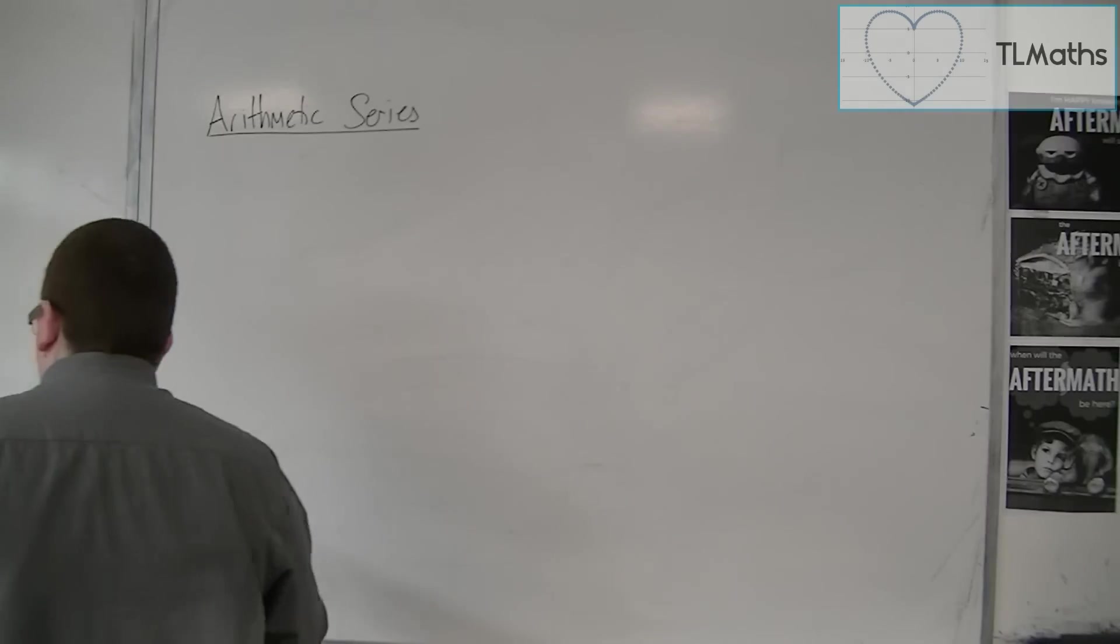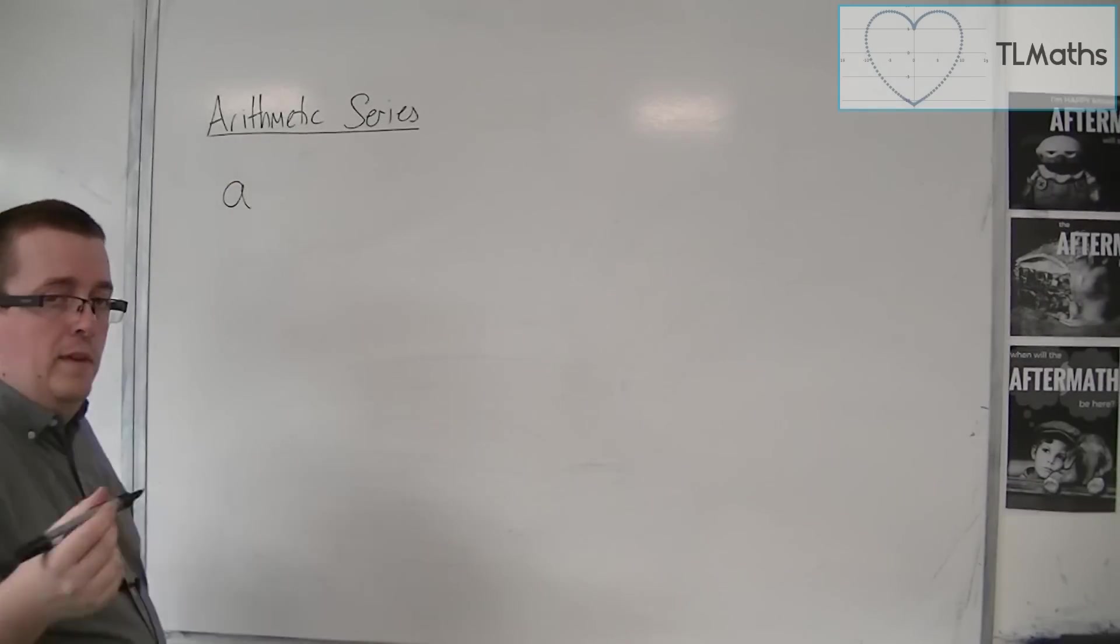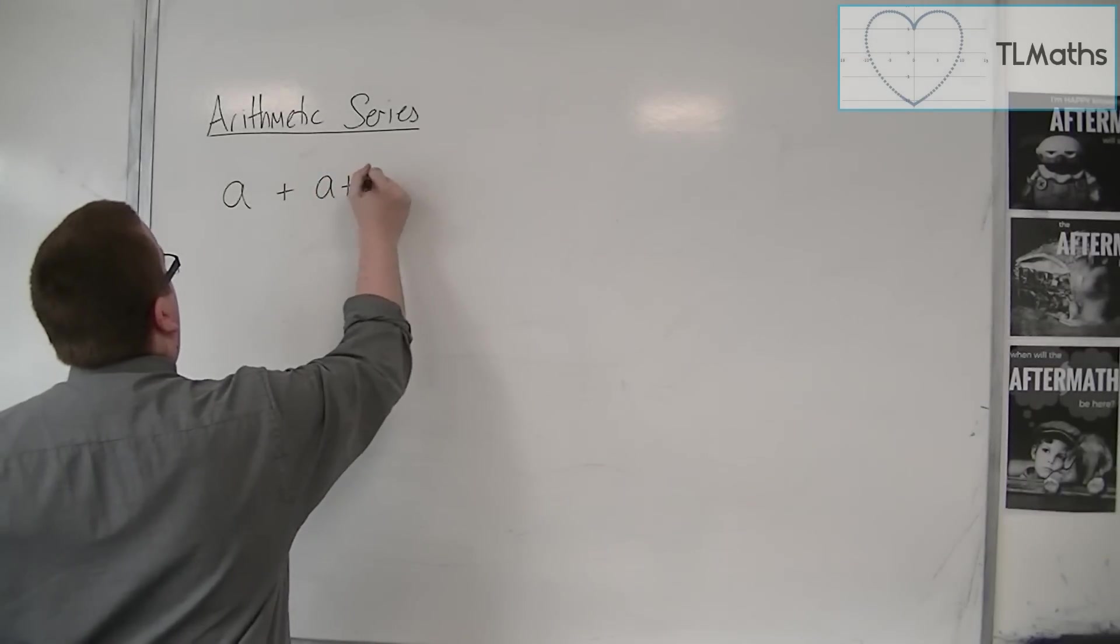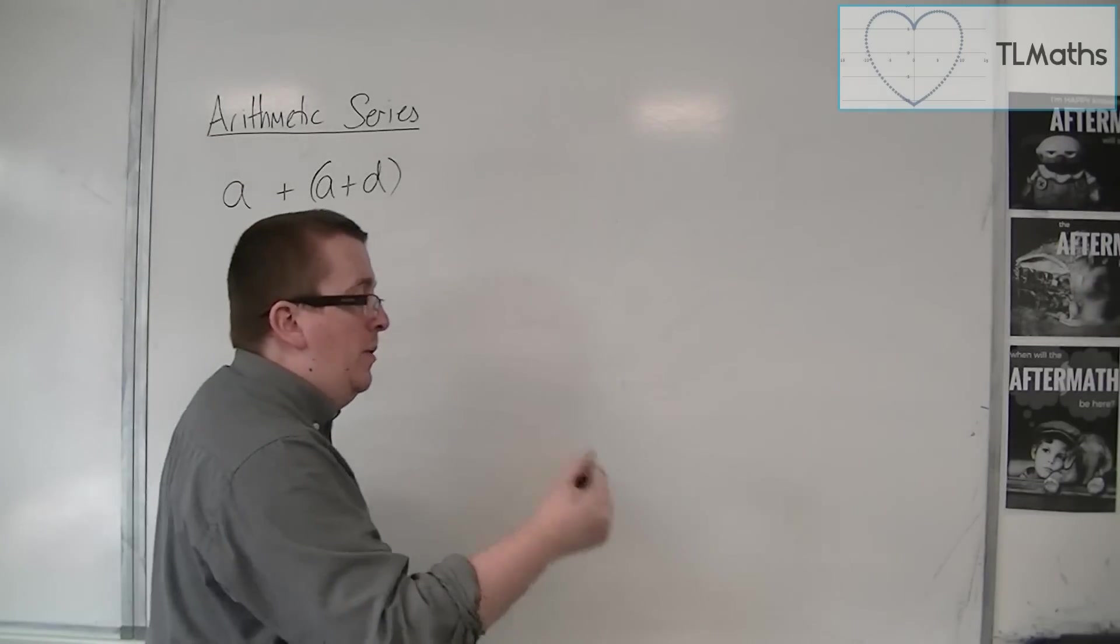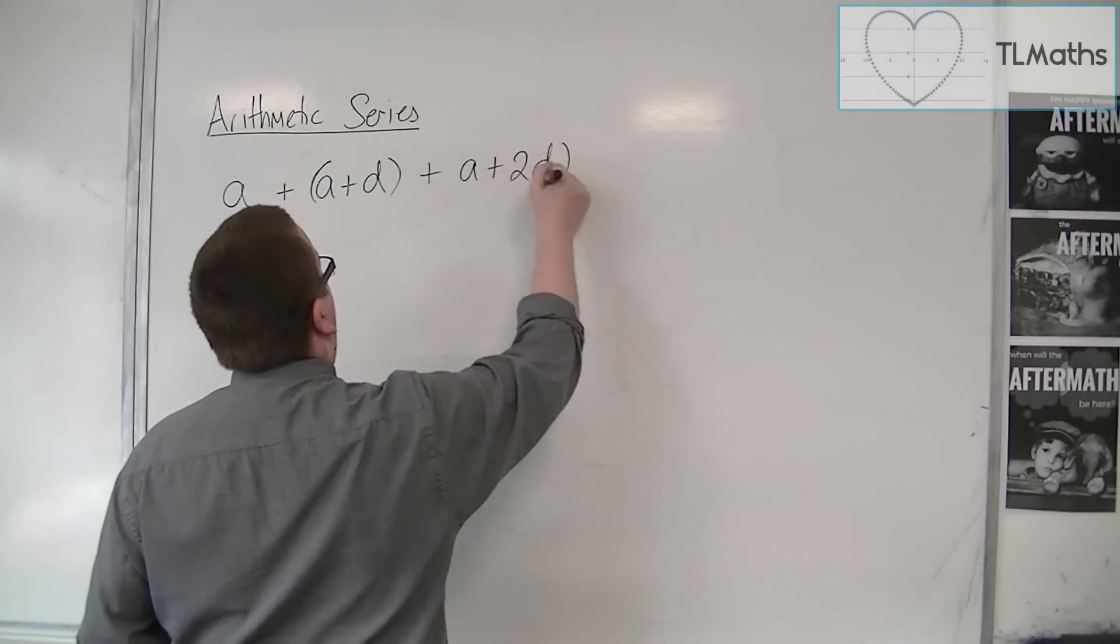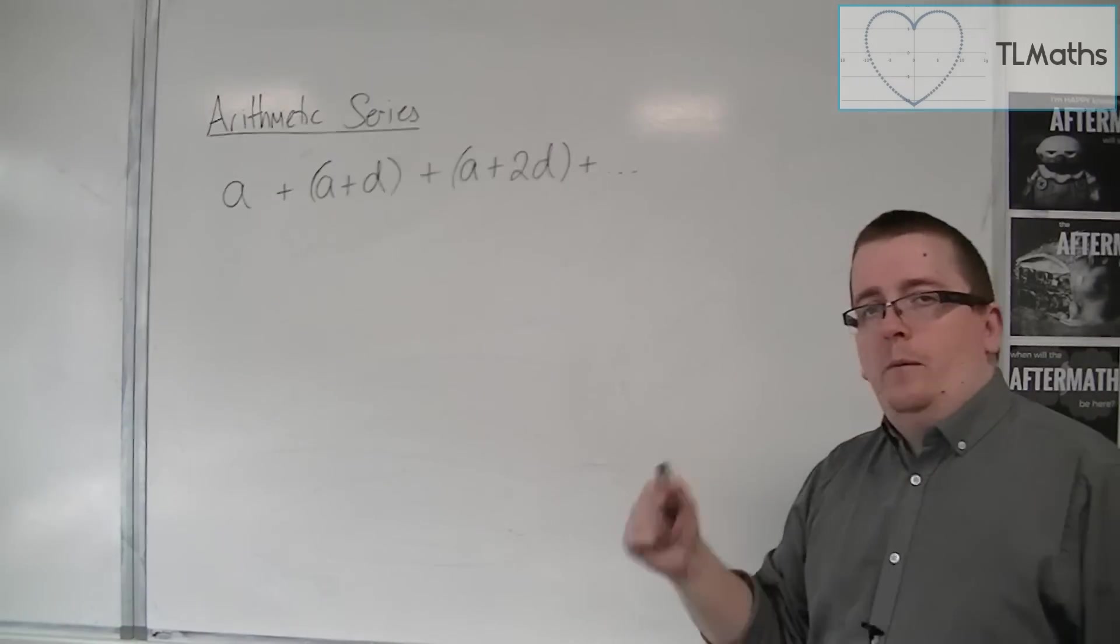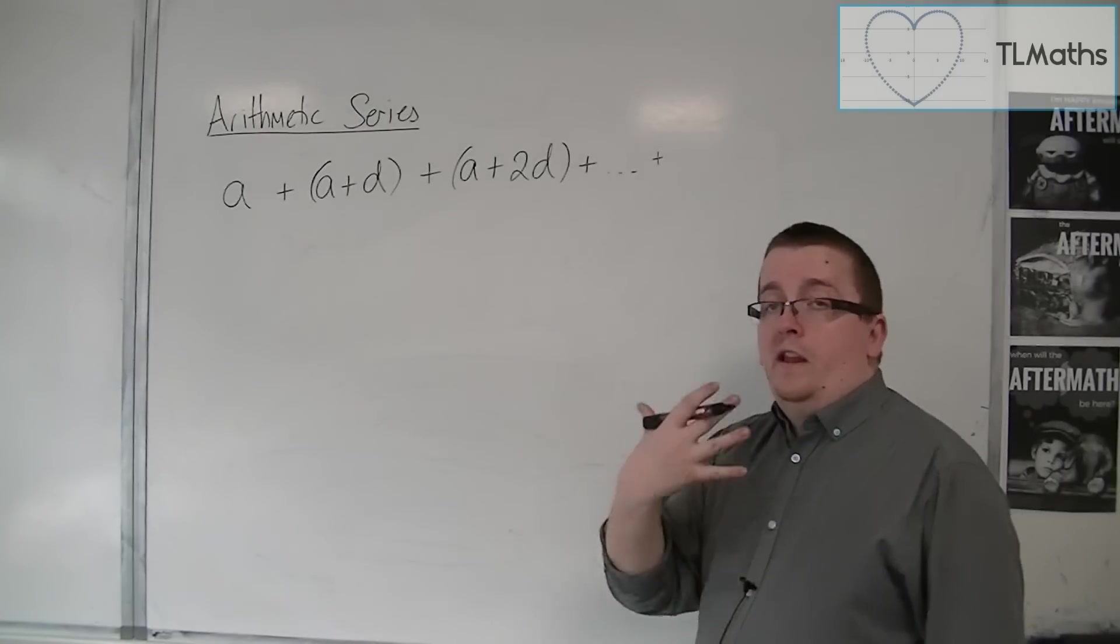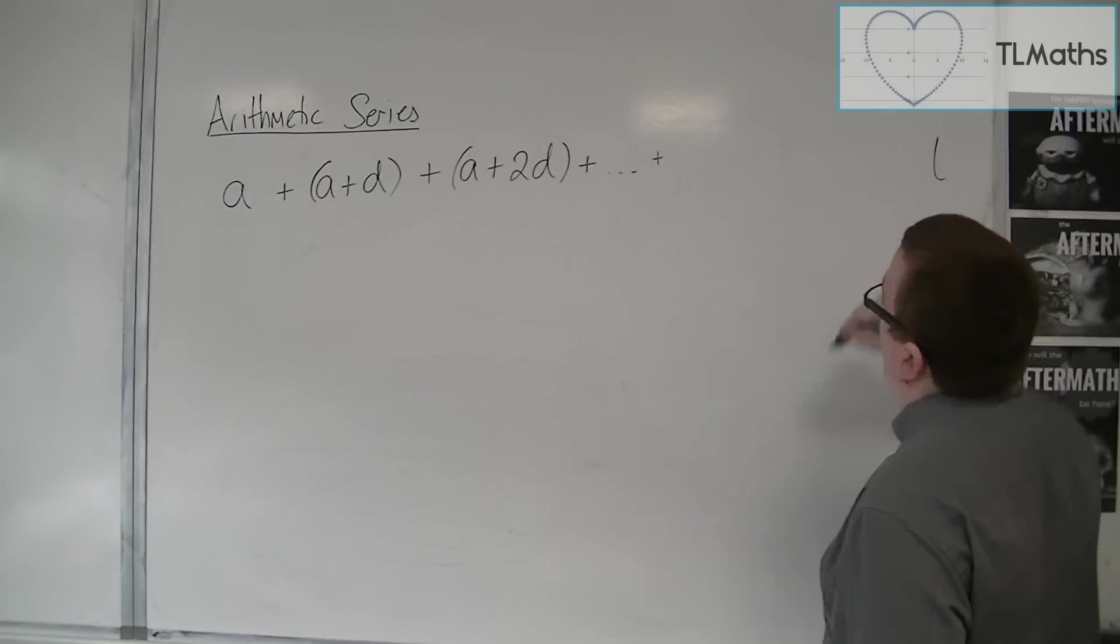We're going to start off with a because that's the first term, and then the second term is a plus d. The third term is a plus d plus d, so a plus 2d. This is going to go on and on all the way up to eventually the last term of the arithmetic series, which we're going to call L for last.